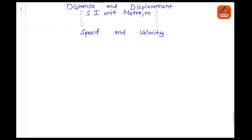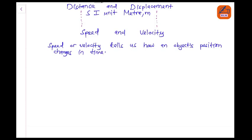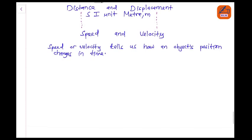Speed or velocity tells us how an object's position changes in time. How an object's position changes in time.